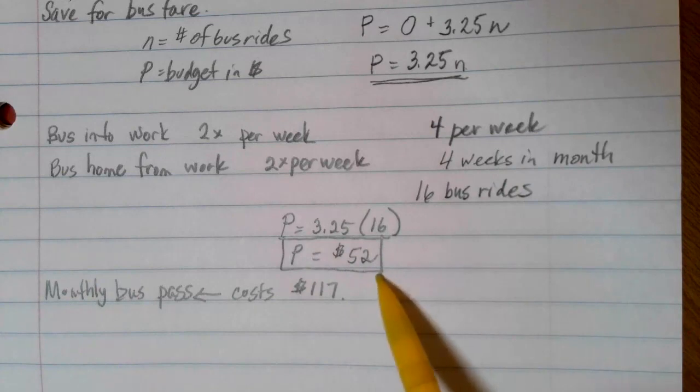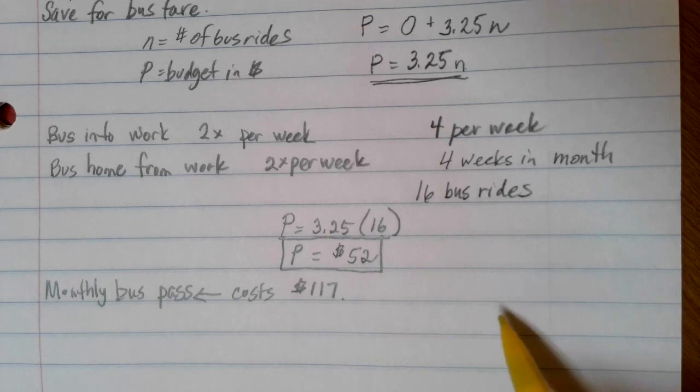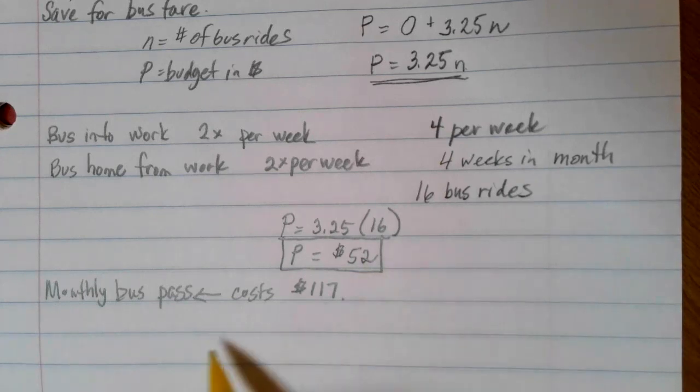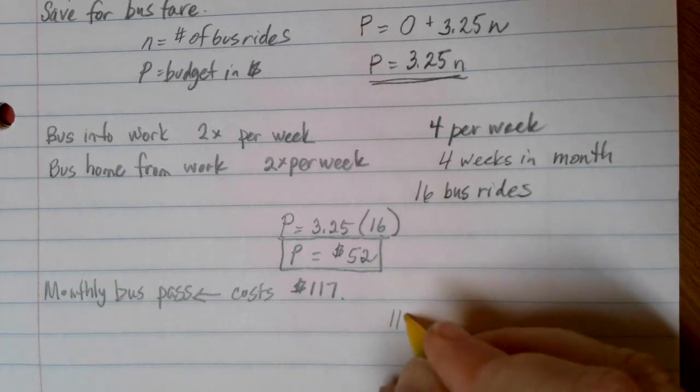But if I had to go a lot more, it might make more sense to do the monthly bus pass. So where's that kind of break-even point? At what point is it going to end up being cheaper to switch to the monthly bus pass? Well, that's when the individual rides get to be more than $117.